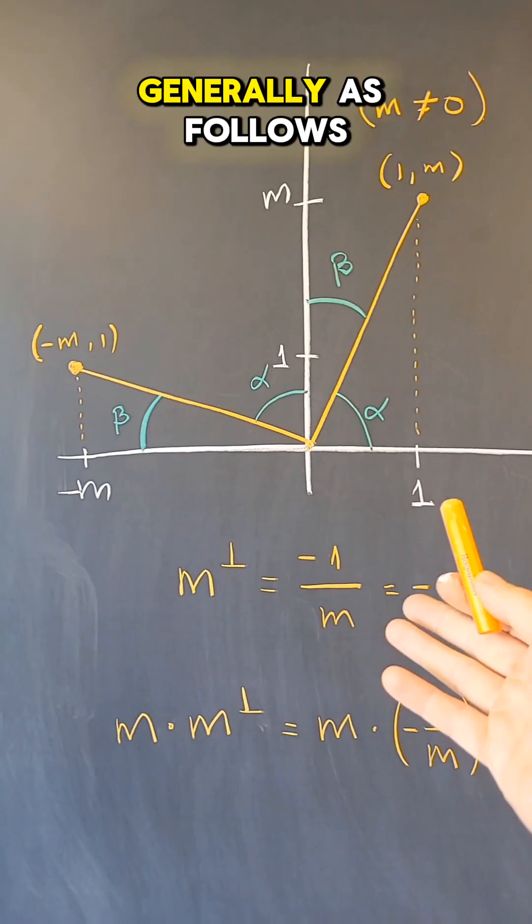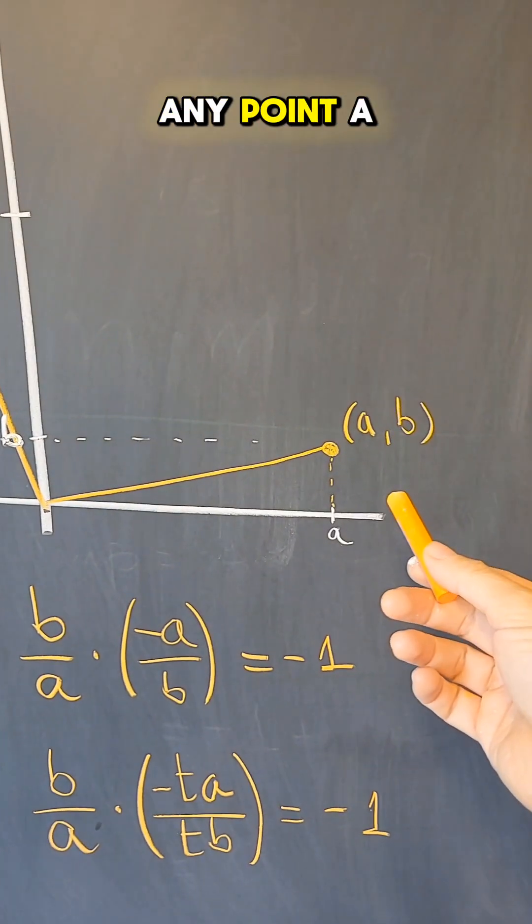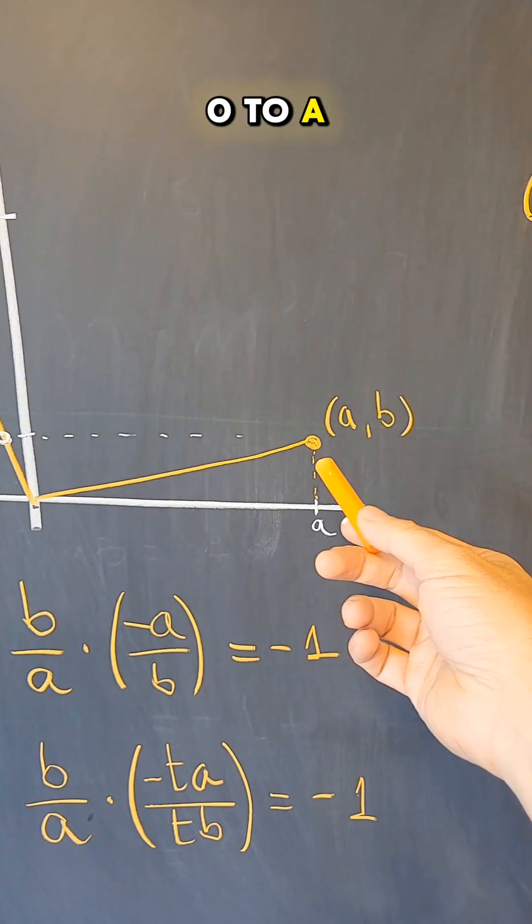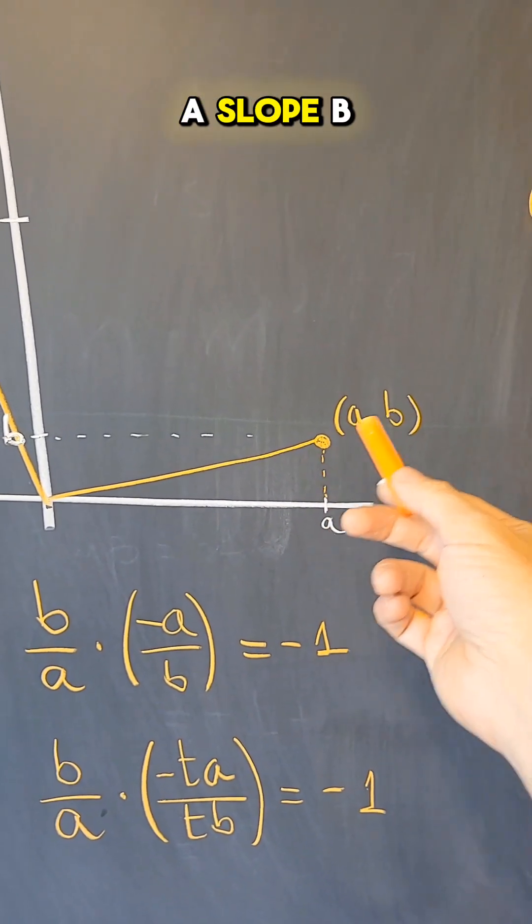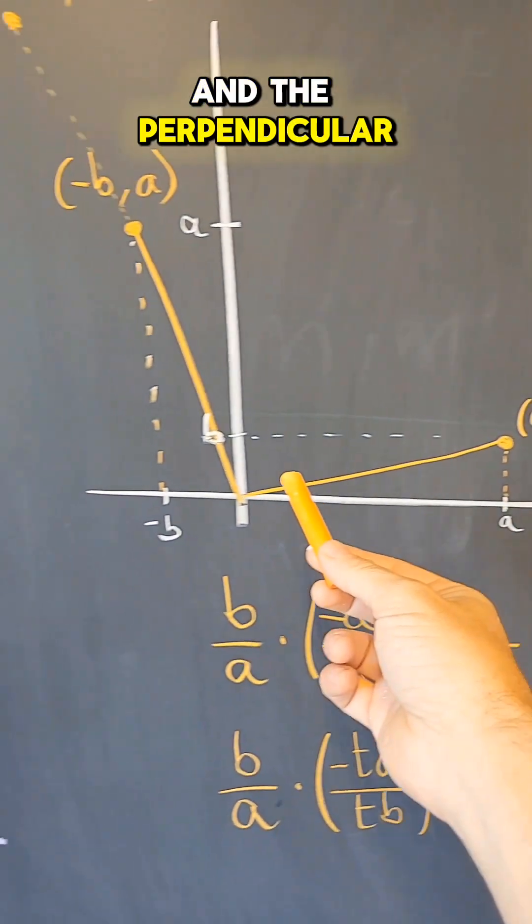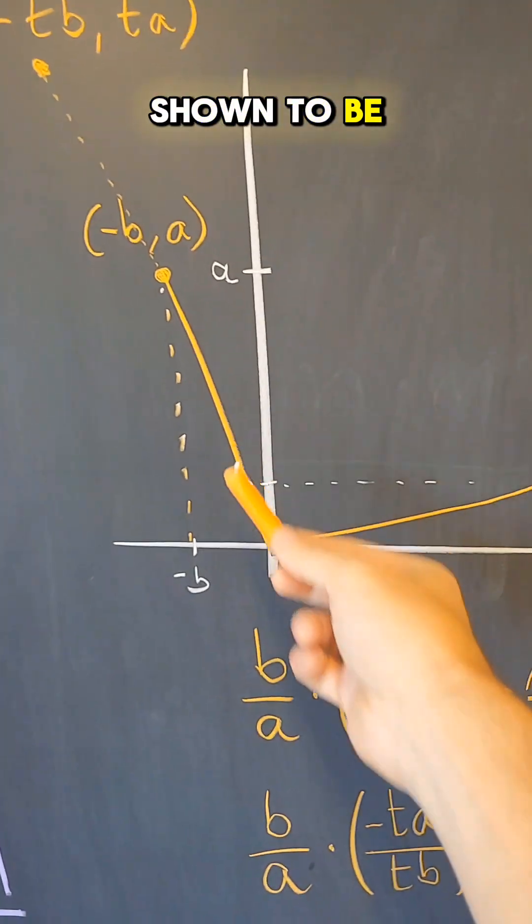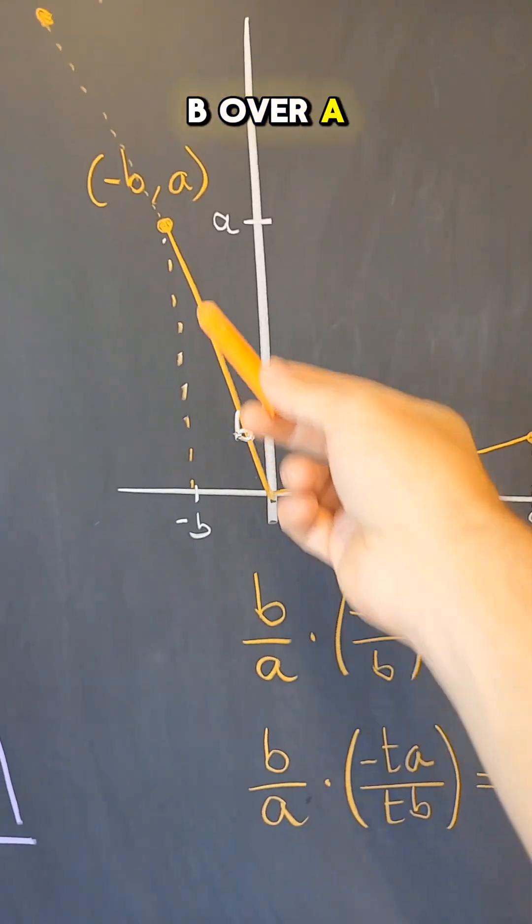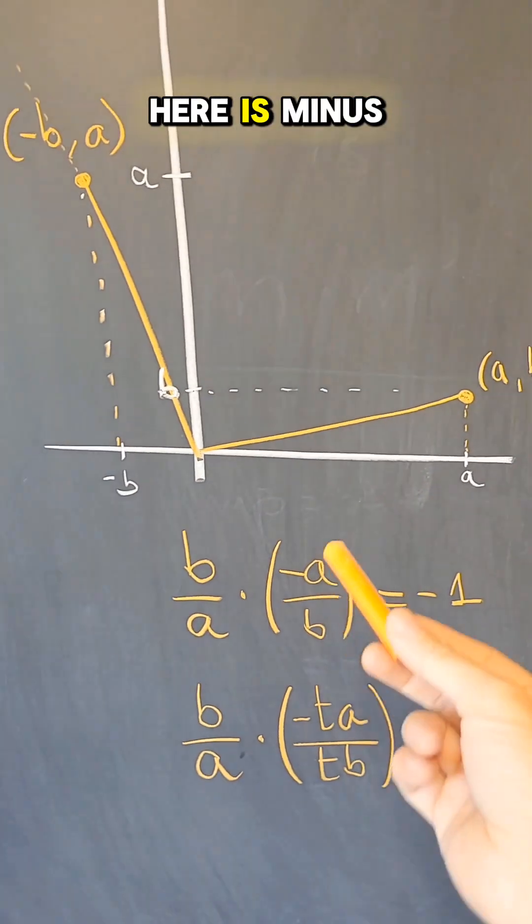But we can do this more generally as follows. If you take any point a, b, and you trace the segment from 0, 0 to a, b, then this line has a slope b over a, and the perpendicular line can be shown to be the line segment that goes up to minus b over a, and the slope here is minus a over b.